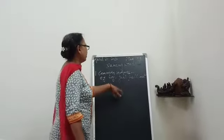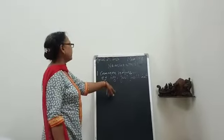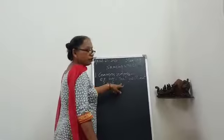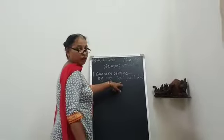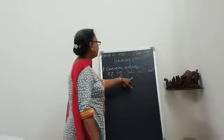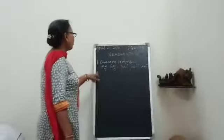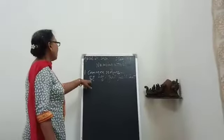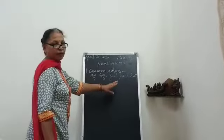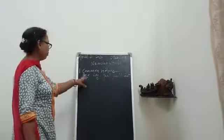If I call a girl and say 'girl, come here,' girl is the common name because girl has not been given a specific name. So common nouns are the name of person, name of place, name of thing — common in all words.